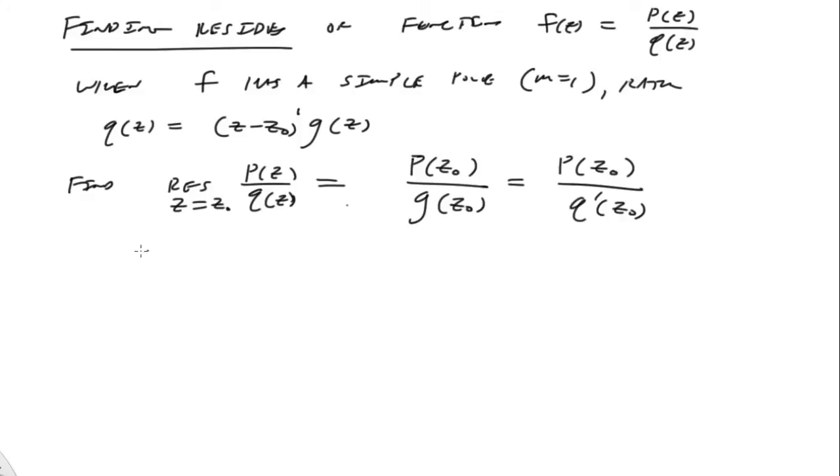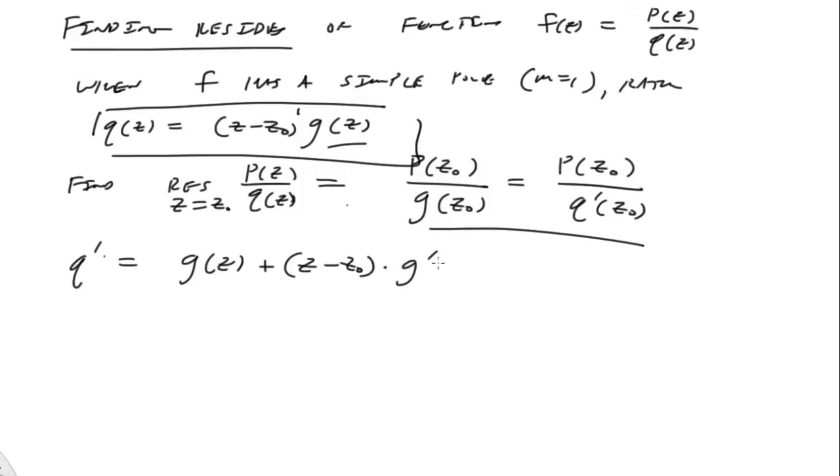So, to get this result, all you have to do is, because we have this identity, and I may not know what g is, but let's just check this out. If I take q prime, that's going to be equal to, taking the derivative of this, so it's going to be just g of z plus z minus z-naught times g prime of z.